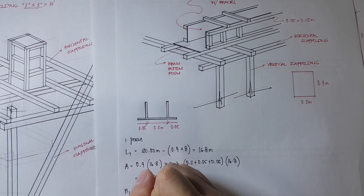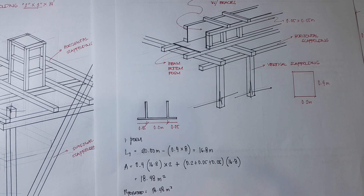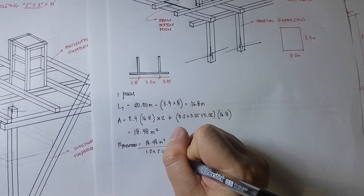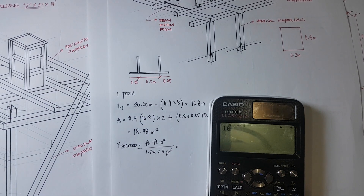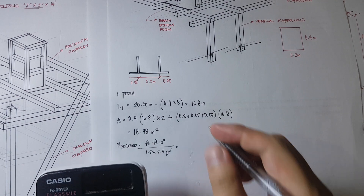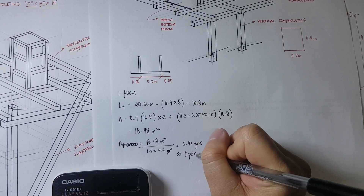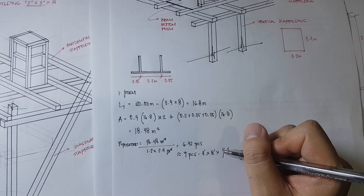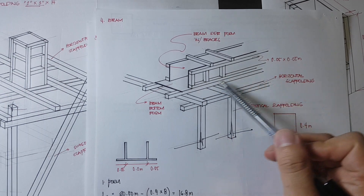To get the number of plywood sheets, simply divide 18.48 square meters by the commercial size of plywood which is 1.2 by 2.4 square meters. So 18.48 divided by (1.2 × 2.4) = 6.42 pieces, which rounds up to 7 pieces of 4 feet by 8 feet by 1/4 inch plywood.